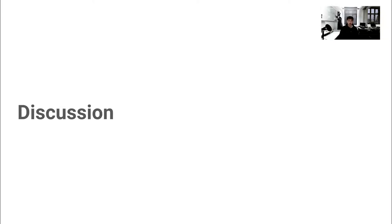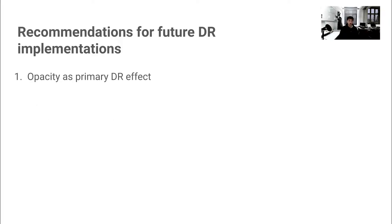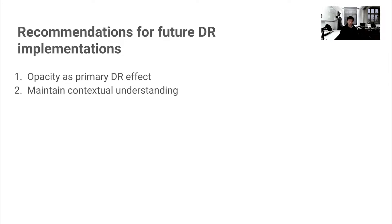Combining the results of our two studies, we present six recommendations for future diminished reality implementations. First, opacity adjustment works well as a primary diminished reality effect — participants generally agreed it is effective, straightforward, and aesthetically acceptable. Second, in many situations, users may benefit from a reduced understanding of their environment while still preferring to maintain a vague sense of context; the outline effect may be useful here, and techniques for providing contextual understanding at lower levels of distraction may be valuable in the future. Third, users generally felt uncomfortable without agency over the diminished reality.